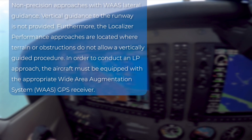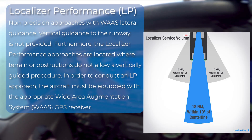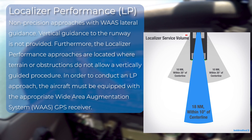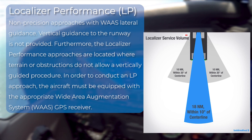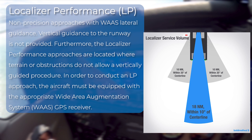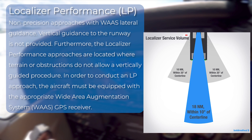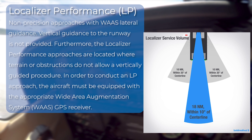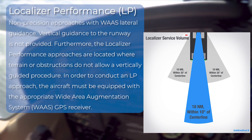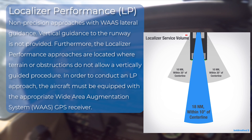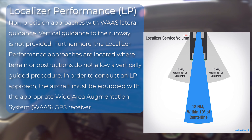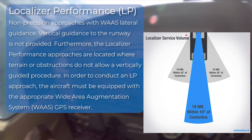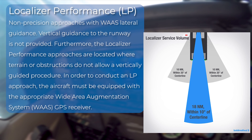Localizer performance approaches are non-precision approaches with WAAS lateral guidance. Vertical guidance to the runway is not provided. Furthermore, localizer performance approaches are located where terrain or obstructions do not allow a vertically guided procedure. In order to conduct a localizer performance approach, the aircraft must be equipped with the appropriate Wide Area Augmentation System GPS receiver.